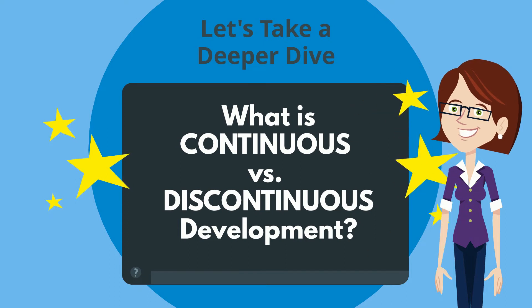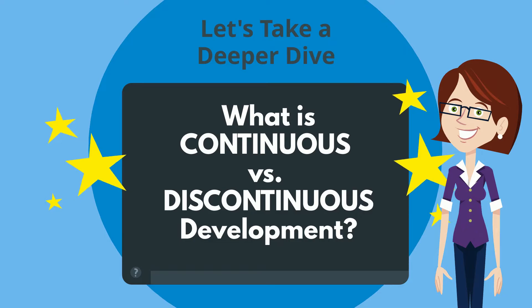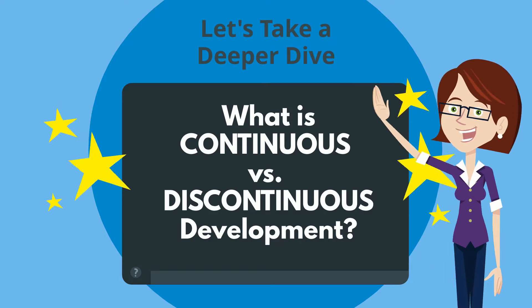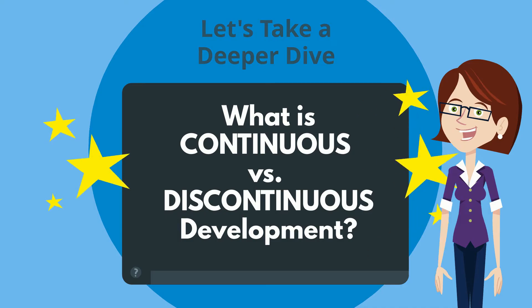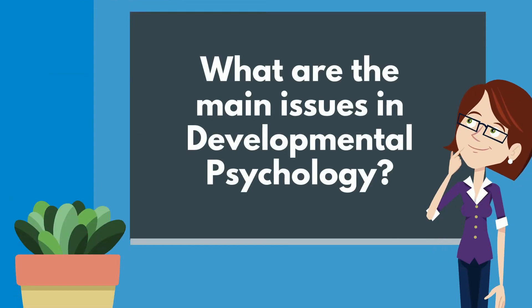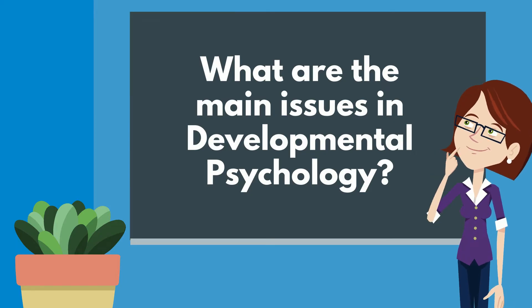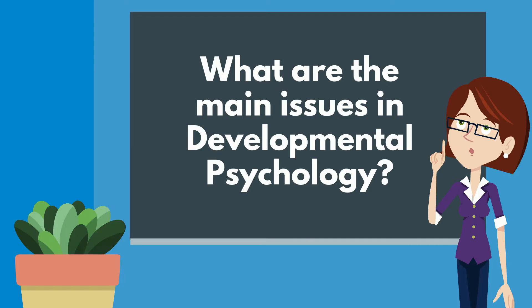Let's take a deeper dive into one of the topics in Unit 1, Chapter 1: Issues in Lifespan Development. There are a number of important issues that have been debated over the history of developmental psychology. What are these main issues?